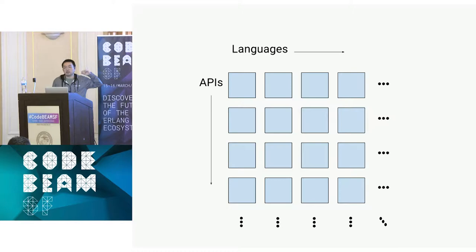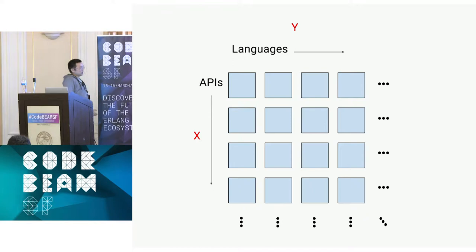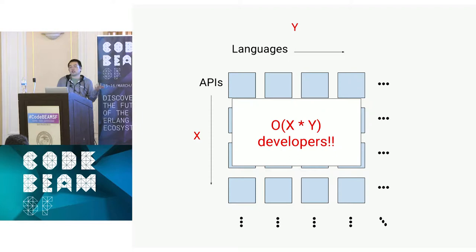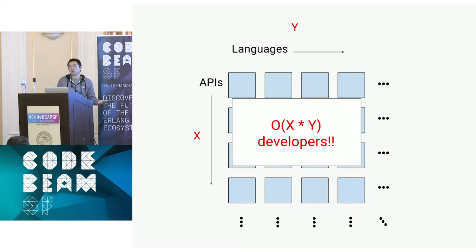You can consider each row of this matrix to be an API change or a new feature added to a single API, because you have to propagate that change across all of your API clients for every language. So now we have X APIs and Y languages, and we have to maintain and build X times Y client libraries. Imagine trying to tell your boss we want to support Elixir, but we'll need X more developers and six months to add it. Clearly this entire process doesn't scale.